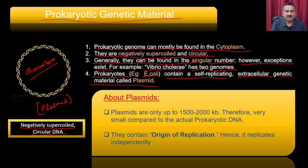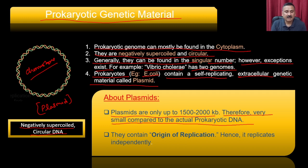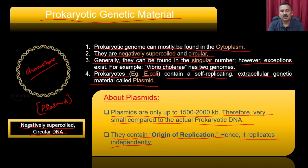Plasmids are small-size DNA, only about 1,500 to 2,000 kb — very small compared to the actual prokaryotic DNA. They contain an origin of replication and replicate independently. Plasmids do not require any help from the chromosome; they are independent self-replicating extrachromosomal genetic material.